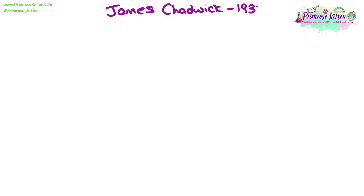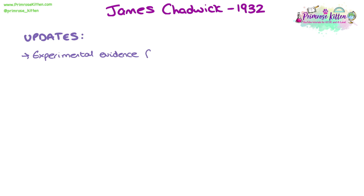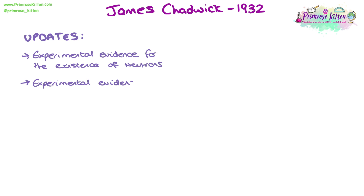The next big update came in 1932 from James Chadwick. The main update was experimental evidence for the existence of neutrons — up until this point, neutrons had not been mentioned in the model of the atom. Chadwick also provided experimental evidence that the neutrons he'd found were located in the nucleus, in addition to the protons we already knew were there from the Rutherford experiment. So now the nucleus is composed of both protons and neutrons.